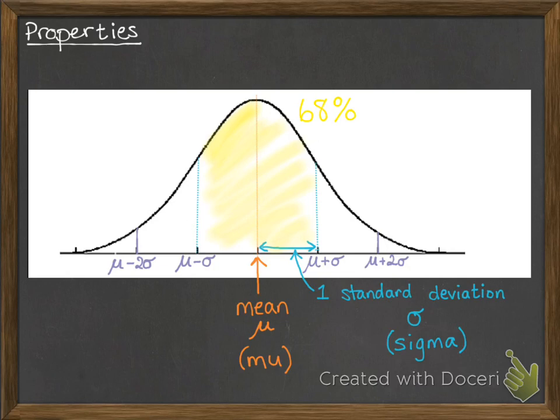This portion in the middle will always cover 68% on a normal distribution. So, within one standard deviation of the mean, we will have 68% of the data.